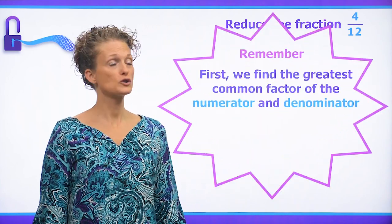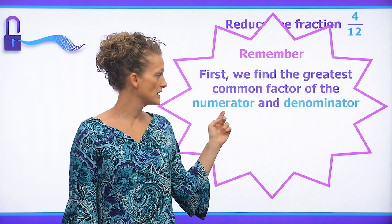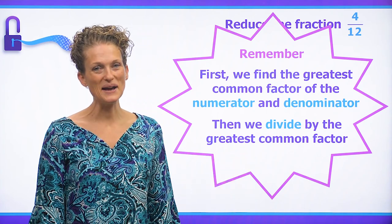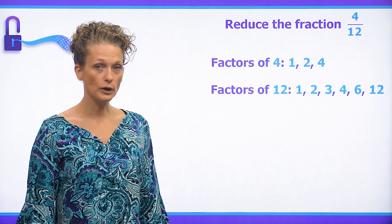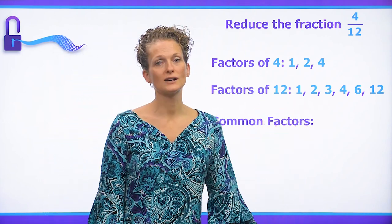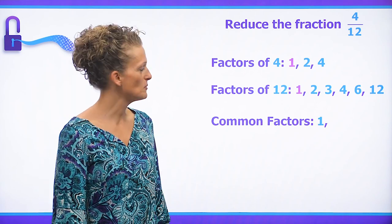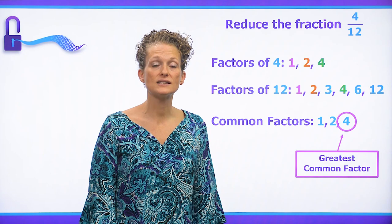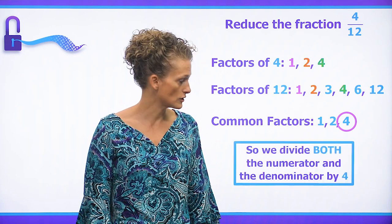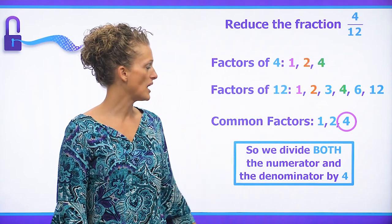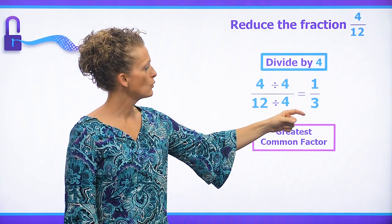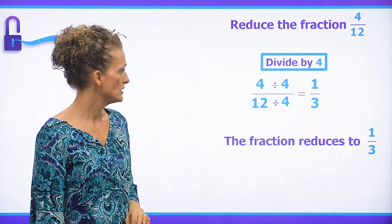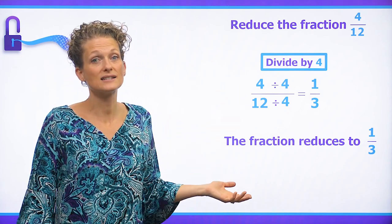Now let's go ahead and reduce the fraction four over 12. To reduce the fraction, we find the greatest common factor between the numerator and the denominator, then divide both by it. The factors of 4 are 1, 2, and 4. The factors of 12 are 1, 2, 3, 4, 6, and 12. The common factors are 1, 2, and 4, so 4 is the greatest common factor. Four divided by 4 gives us 1, and 12 divided by 4 gives us 3. So 4 over 12 reduces to 1 over 3, and that is as simple as it will go.